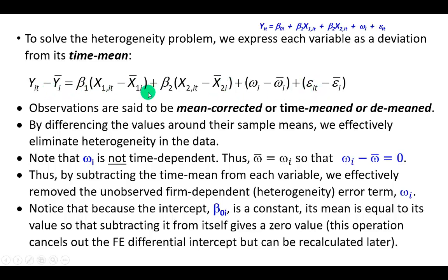And because the omega term, which is the heterogeneity term, is not time dependent, its value for each firm i is the same across time, so that the difference is zero. Mark you, the heterogeneity term is specific to a firm and is assumed to be constant across time for each firm.